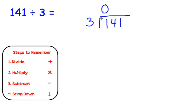Next, we'll check and see how many times 3 goes into 14. So we can think of our facts, and 3 times 4 is 12, so that fits in. So we're going to put a 4 above the 14, and then we multiply. This is step 2. So 3 times 4 is 12. We write the 12 beneath the 14. Our next step is to subtract. So we're going to do 14 minus 12, which gives us 2.